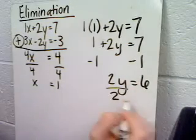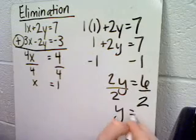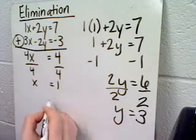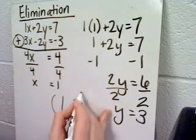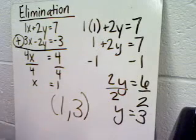I'm going to subtract 1 from both sides and divide by 2. And that gives me y equals 3. So the solution, or the point when these two lines intersect, is 1, 3.